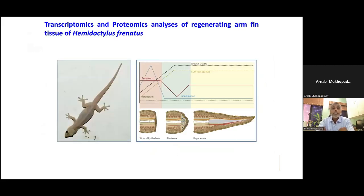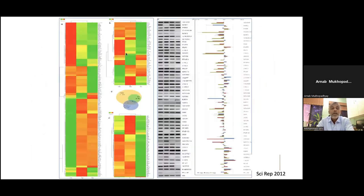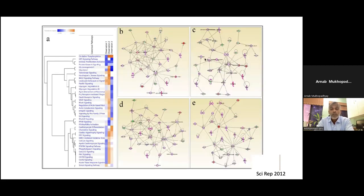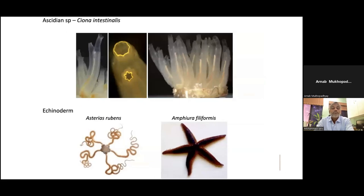From this, I move to the other model animal we are using at CCMB — the gecko, the lizard. We amputated the tail and performed high-throughput genomics and proteomics, identified several genes and proteins, and constructed new pathways closely associated with our studies, which we have recently reported. We also use ascidians and echinoderms to understand the biomechanism of regeneration. The ascidian Ciona intestinalis bridges the gap between vertebrate and invertebrate, making it a bridging model between both.